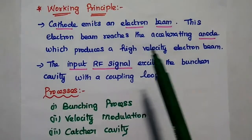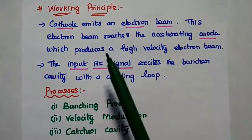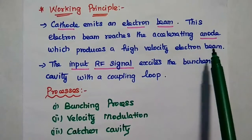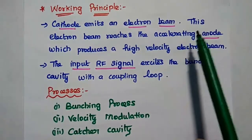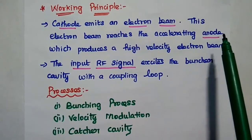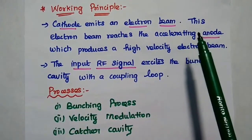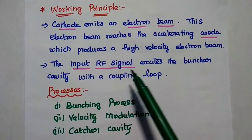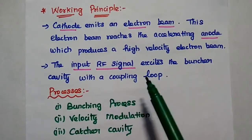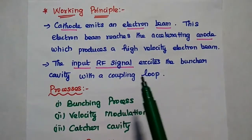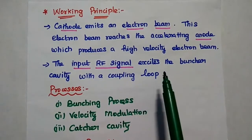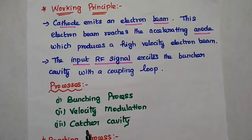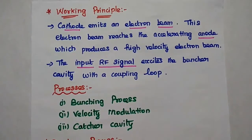Let's take an overview of the working principle of the klystron amplifier. The cathode emits an electron beam. This beam reaches the accelerating anode, which produces a high-velocity electron beam. The input RF signal excites the buncher cavity with a coupling loop. There are three important processes involved: bunching process, velocity modulation, and finally catcher cavity energy transformation.